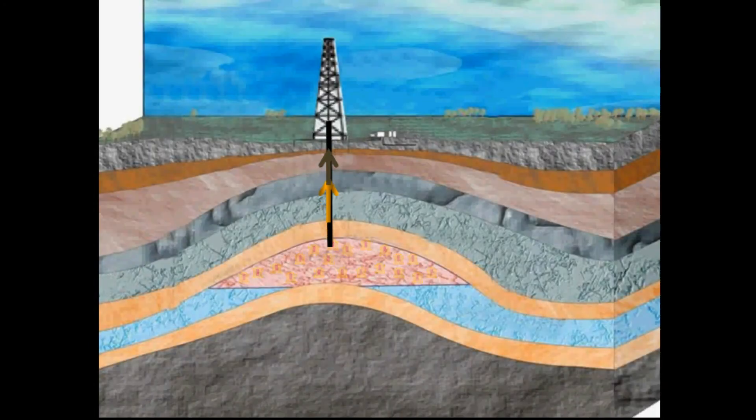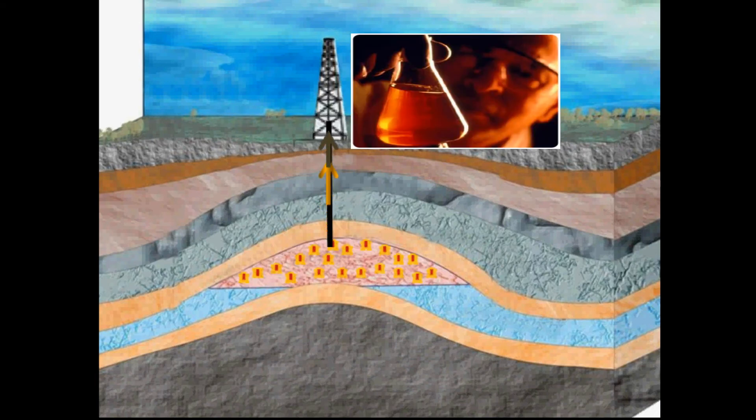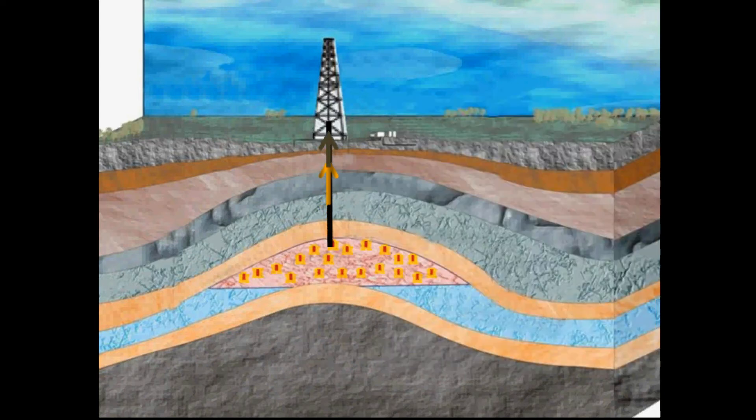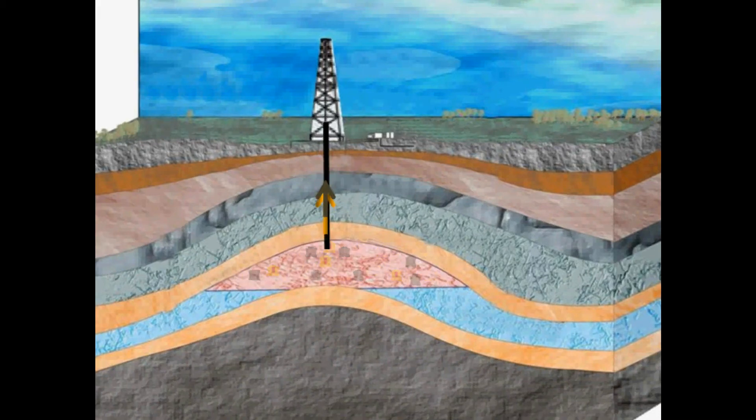In retrograde condensate gas reservoirs, the escaping gas reverts back to liquid at atmospheric conditions. This rich condensate oil is very profitable when the well is first produced because it needs very little refining. However, over time, as pressure drops, the condensate begins to form within the formation instead of in the well. These liquids that build up in the reservoir restrict the flow rate of the gas and cause gas and condensate production to decrease substantially.